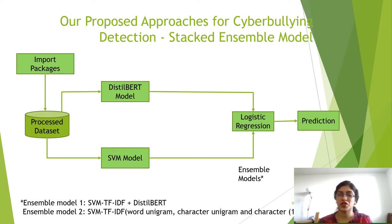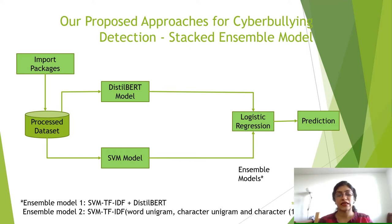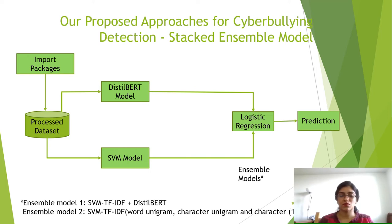We have two models based on two completely different approaches: one based on textual features, and the other based on the transformer's ability of language understanding. Since these are two heterogeneous models, we chose a stacking ensemble model to combine their predictions. As we are dealing with a binary classification problem where input features are independent, logistic regression was used as the meta-model. We generate two stacked ensemble models: the first combines simple TF-IDF of words with DistilBERT, and the second combines TF-IDF of words, characters, and n-grams on SVM along with the DistilBERT model.